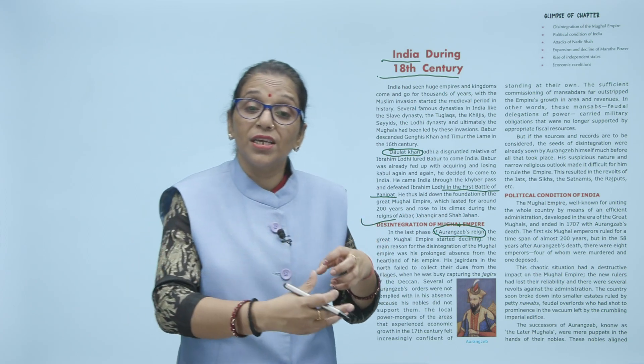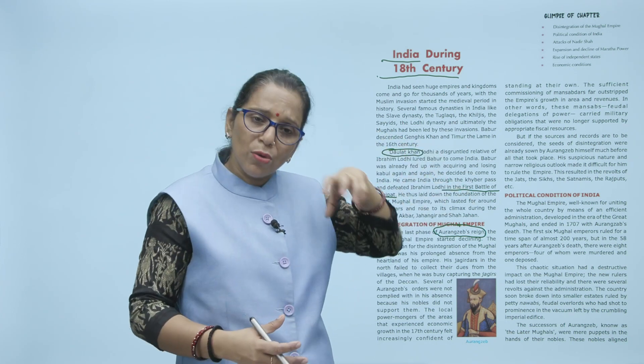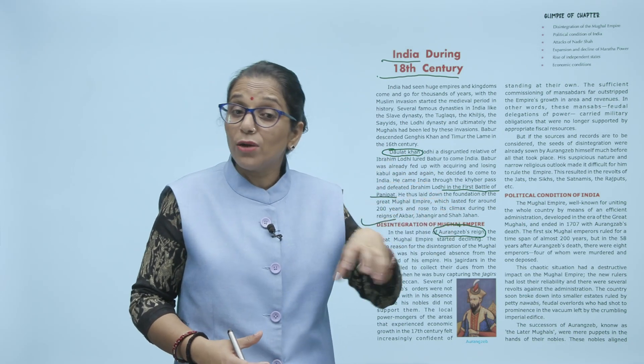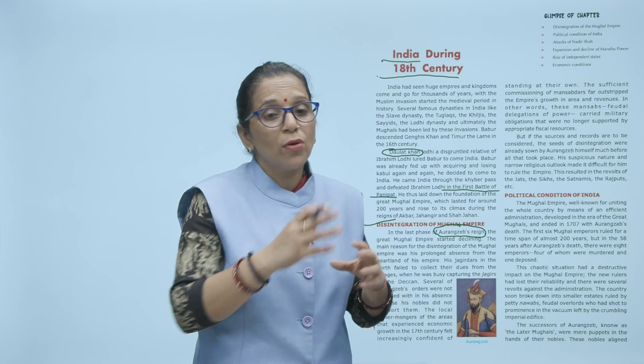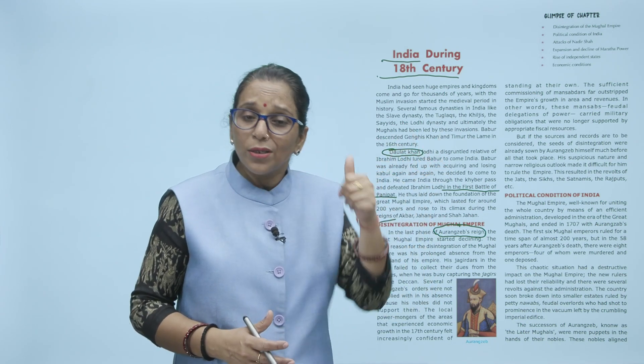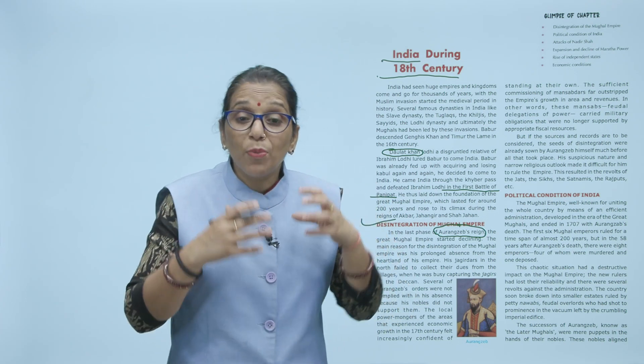Jo bhi revenue collect karte the, woh apne aap ko majboot karte the — they strengthened their own position taaki they can make themselves free from Aurangzeb's control. Jo bhi mansabdar the, woh apne aap ko jis jis area mein unko point kiya gaya tha, us area mein yeh koshish karte the ki jitna bhi resource collect karo, Aurangzeb ko dena hai jo bhi tax woh apne paas rakhe the. To fiscal aur army dono hi support Aurangzeb ko nahi mila tha. Unke apne alag planning chal rhi thi — hum toh alag ho jayenge Aurangzeb se. Toh ek yeh bada reason tha.